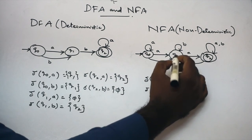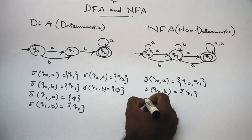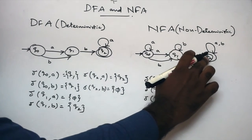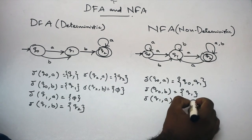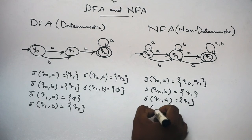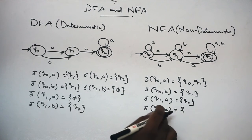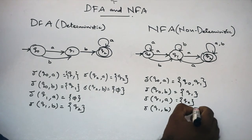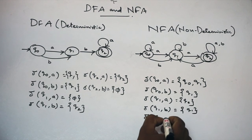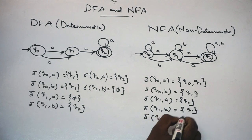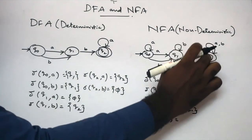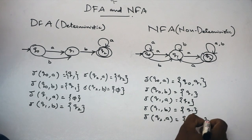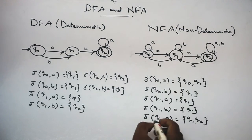What is the transition of Q0 on B? Q1. Next, Q1 on A gives Q2. Q1 on B is a self-loop, Q1. Next, Q2 on A gives Q2 and also Q1 — self-loop. So Q1 also Q2. Next, Q2 on B gives Q2. So you can see more than one state — this is NFA, non-deterministic finite automata.